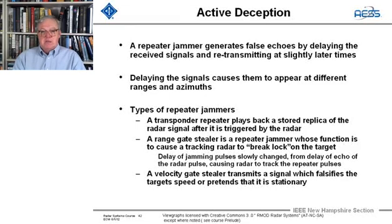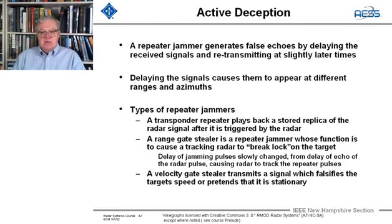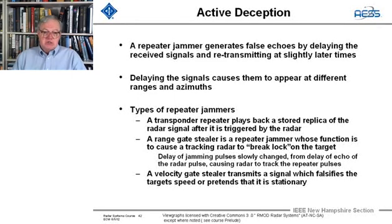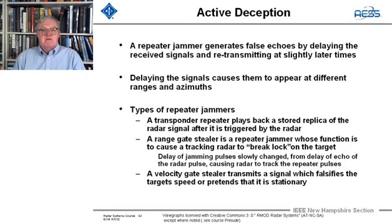Range gate stealing can be done with a repeater jammer. Its function is to cause the tracking radar to break track — the so-called break lock on the target. You slowly change the delay of the echo pulses, causing the radar to track the repeater and not the actual target. Velocity gate stealing similarly falsifies the target speed or pretends it's stationary, all to divert the radar from the actual target.